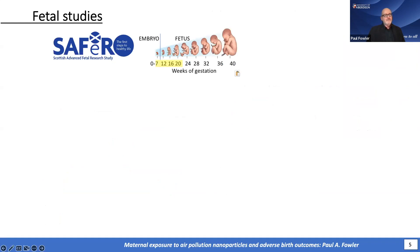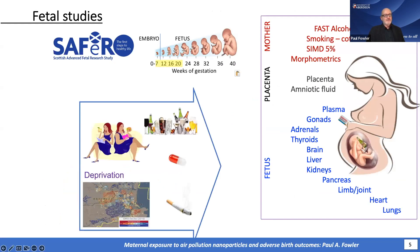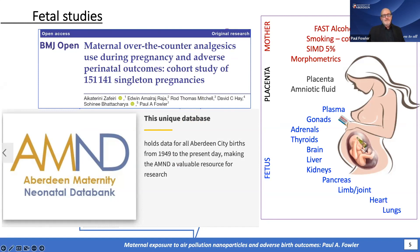We have several fetal collections. We currently collect from seven to 20 weeks of gestation — a whole range of fetal organs and maternal data — from elective terminations by non-surgical means of normal pregnancies. We can look at all sorts of things: smoking, deprivation, obesity, use of medication, drinking. In 1949, a databank was set up to follow all the pregnancies in Aberdeen called the Aberdeen Maternity and Neonatal Databank, and this is on the same population as our fetuses so we can also do epidemiology. Recently, we published a paper using 151,000 pregnancies to look at the increased risk of adverse outcomes if the mother took analgesics.